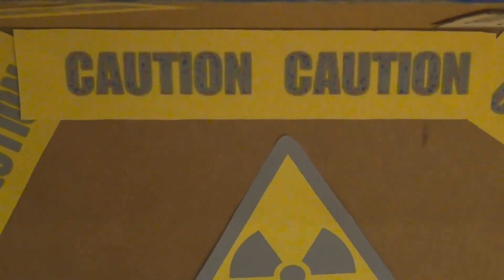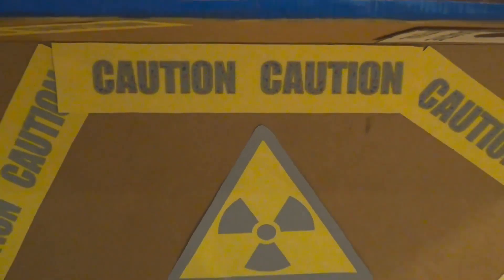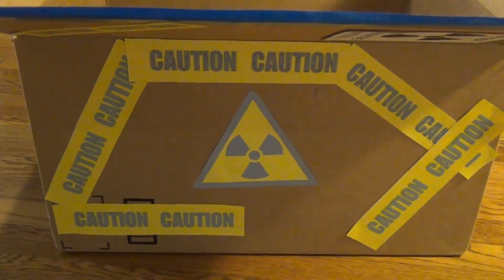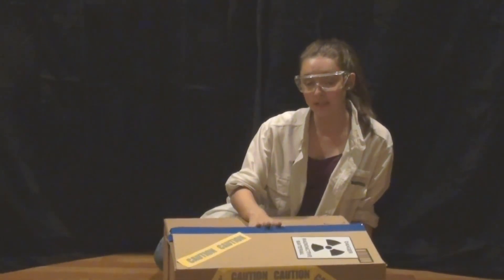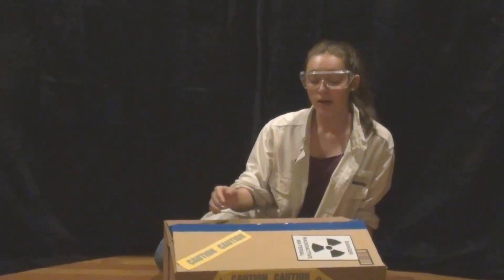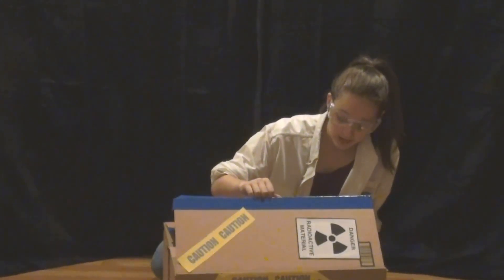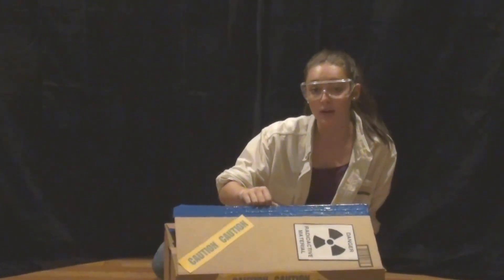To explore the superposition principle further, let's discuss Schrodinger's cat. In this theoretical experiment, a cat is placed in a box with radioactive material that has a 50% chance of decaying and killing the cat. Based on the superposition principle, when the box is closed, the cat is both dead and alive. Only when the box is opened and the cat is observed does it revert to one state.